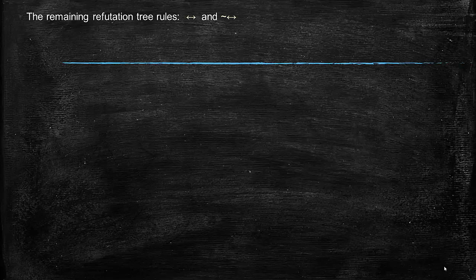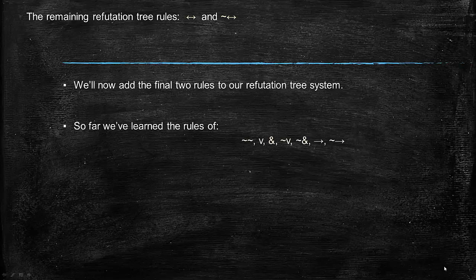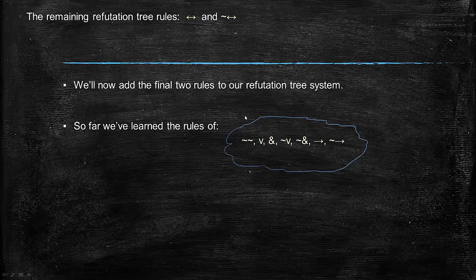We'll go ahead and introduce the last two refutation tree rules: the rule for the biconditional and the negated biconditional. We've already learned the rules for double negation, disjunction, conjunction, negated disjunction, negated conjunction, conditional, and negated conditional. Before doing these next two, make sure you know those rules well, have done the associated worksheets, and are confident operating with them. These last two rules are different.